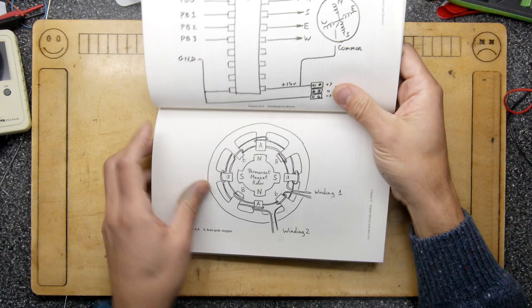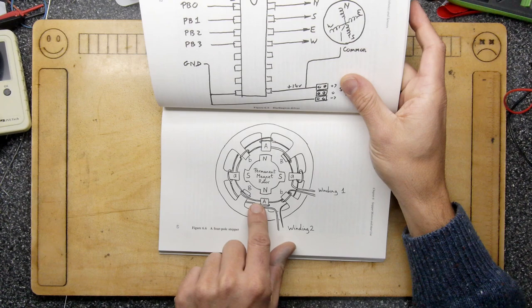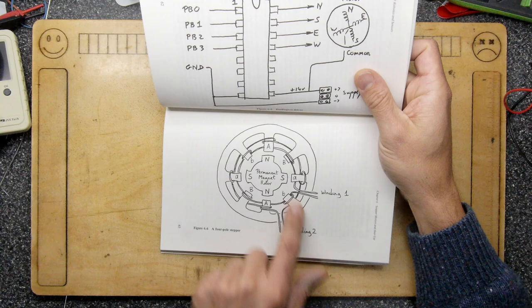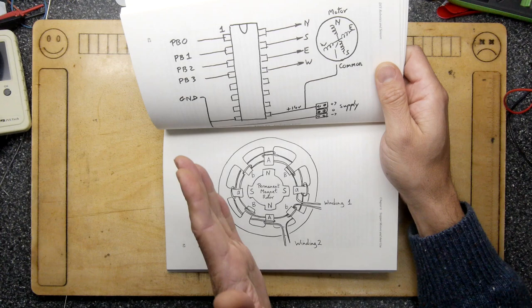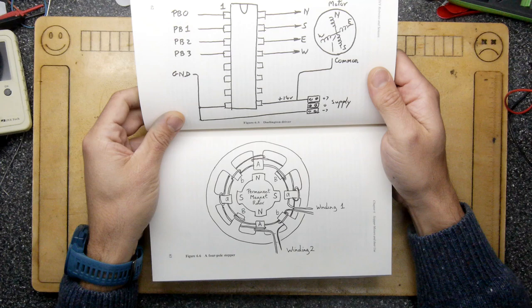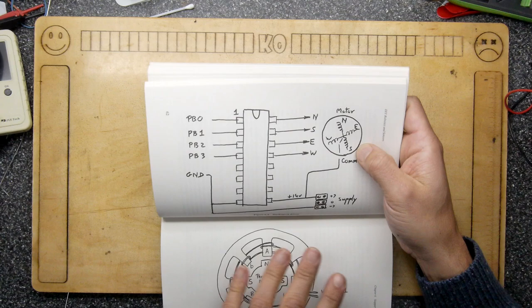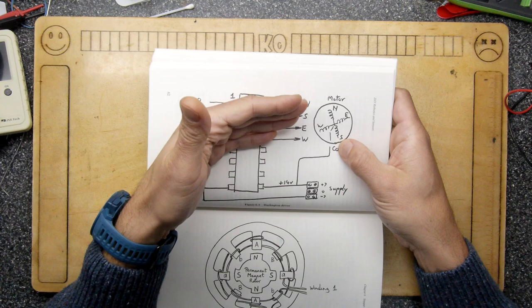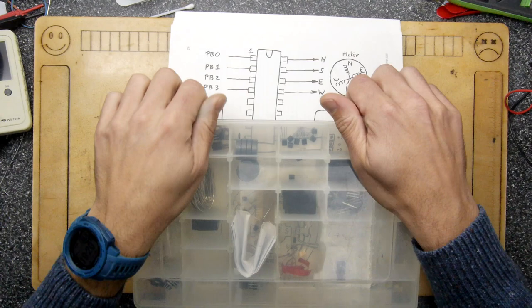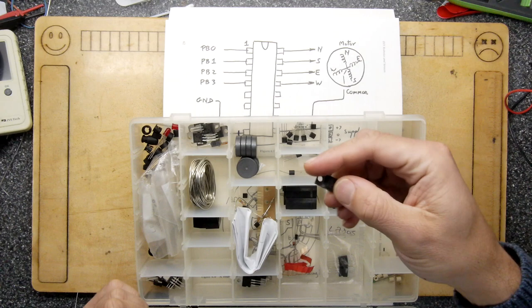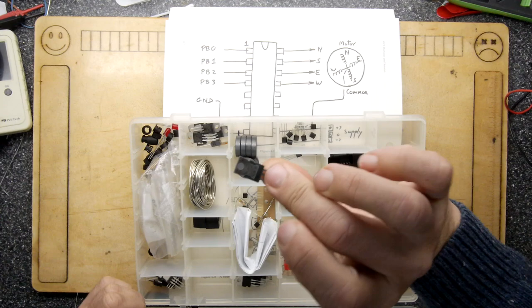It needs a bit of juice, I'm not gonna lie. What they've done here, they're using a Darlington driver. A Darlington transistor is basically a transistor that goes into another transistor to give it more power. I have some here, I can show you. One of these, it's a TIP 121 transistor and you can see it's beefy. These are power transistors, they can take a bit of current.